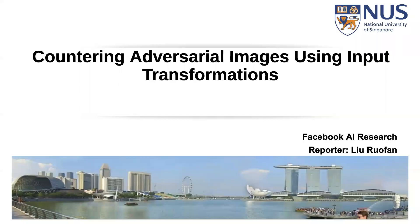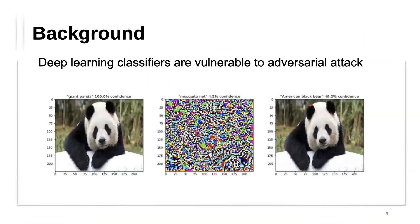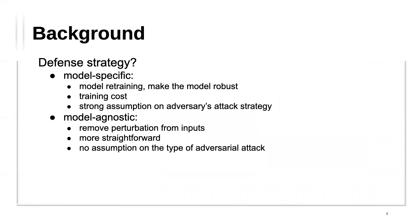Good afternoon everyone. Today I will present a paper on countering adversarial images using input transformation. This paper is from Facebook AI Research. Since I have a series of presentations on adversarial attacks, I assume you are already familiar with the background. Researchers have found that nearly all classifiers are vulnerable to adversarial attacks, and existing defense strategies can be divided into two big categories: model-specific and model-agnostic.